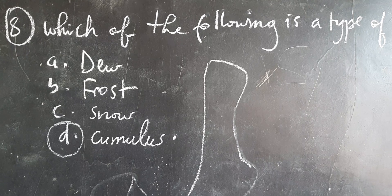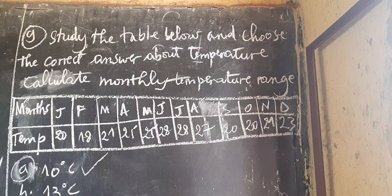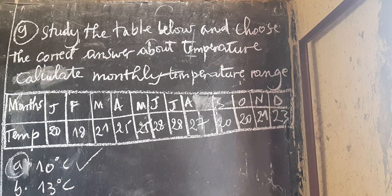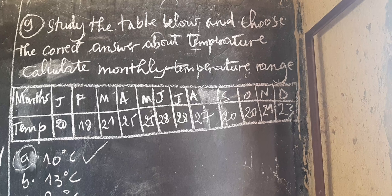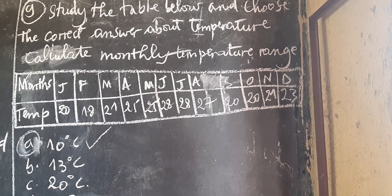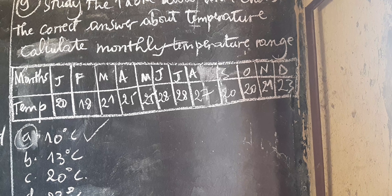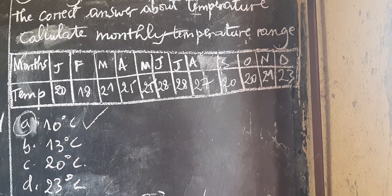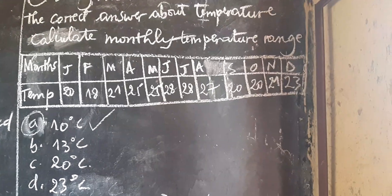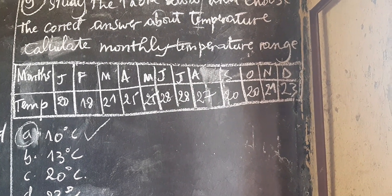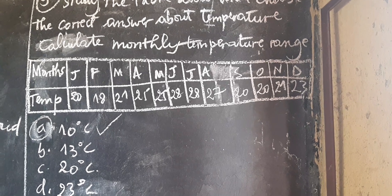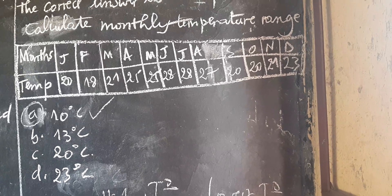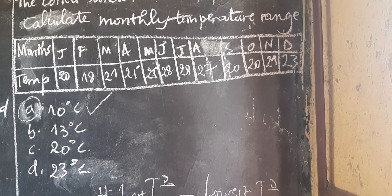Let's go to question number nine. Study the table below and choose the correct answer about temperature. Calculate monthly temperature range. So they give us the months from January up to December and they show us, they give us temperature in degrees Celsius from every month. And they want us to choose the correct answer after calculating the monthly temperature range. A. 10 degrees Celsius, B. 13 degrees Celsius, C. 20 degrees Celsius, D. 23 degrees Celsius.